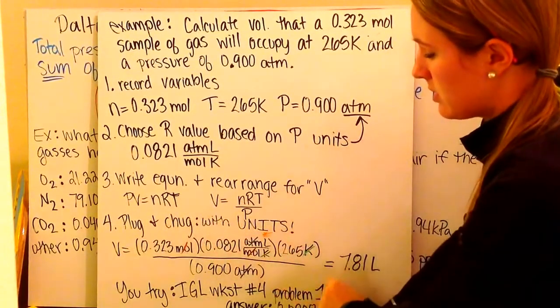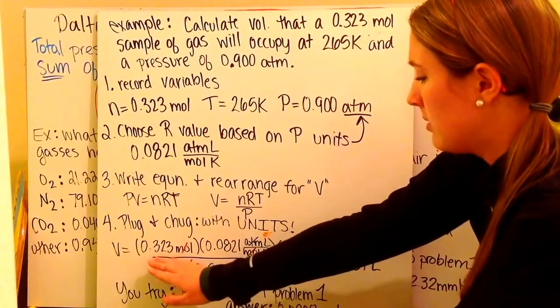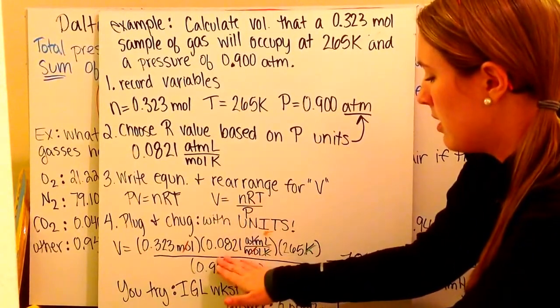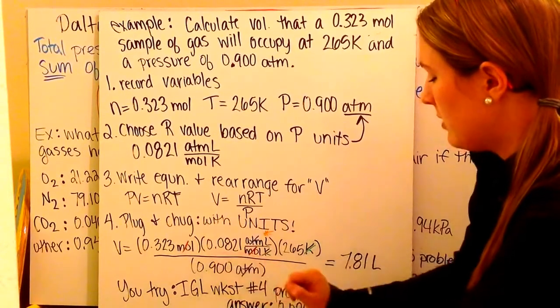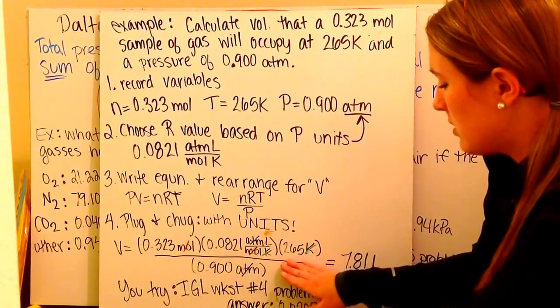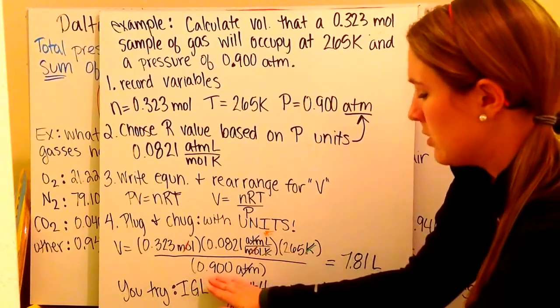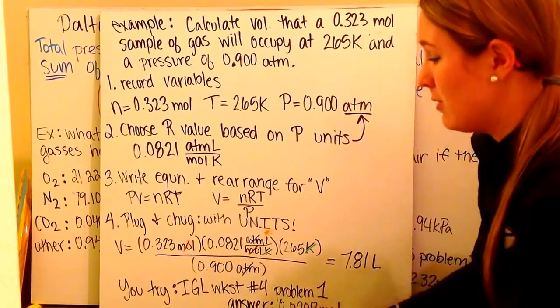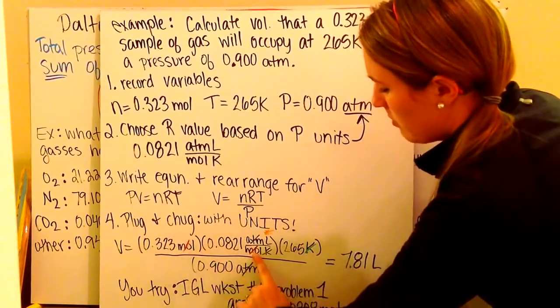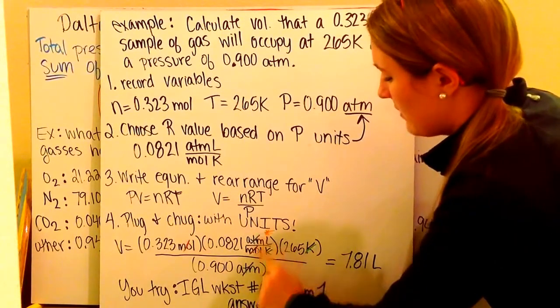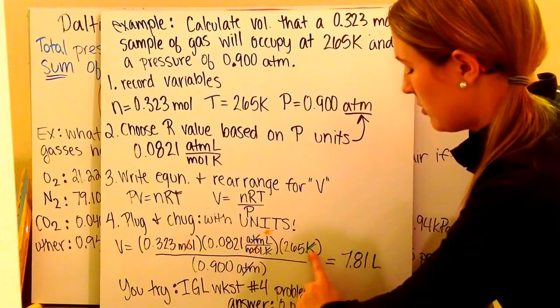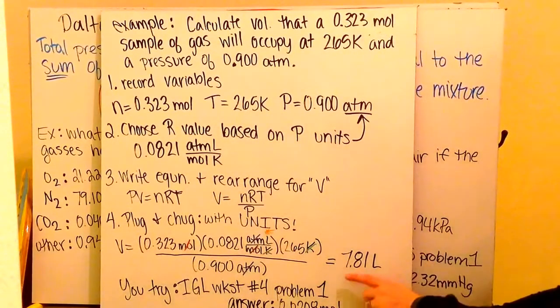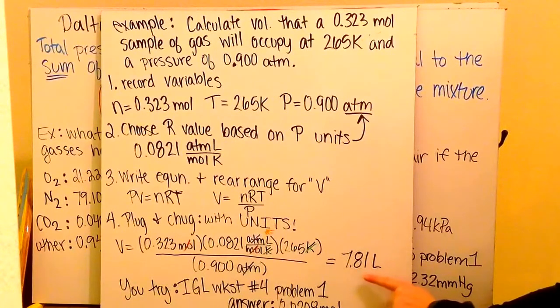So, I plug in my value of my moles of 0.323 moles times my R value for R, my 0.0821 atmospheres per mole Kelvin, times my value for temperature, 265 Kelvin, divided completely by 0.900 atmospheres. I then go ahead and I cancel out my units to determine what are my final units on volume and to double check myself. My moles cancels out with moles in my R value. My atmospheres cancels out with atmospheres in my R value. My temperature units of Kelvin cancel out with my temperature units in my R value. And, I'm left with liters. So, I'm able to find that my gas has a volume of 7.81 liters.